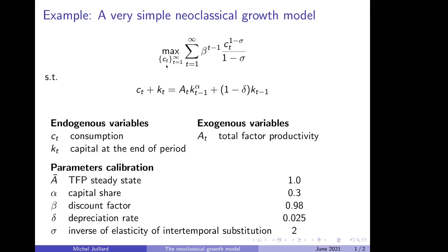A representative household maximizes intertemporal utility that is given by a CRRA period utility function only for consumption. Labor is considered fixed. Then it sums over all future periods to infinity.